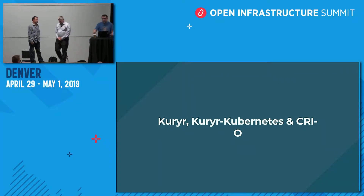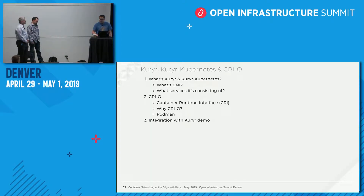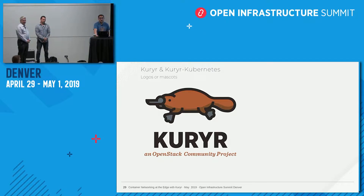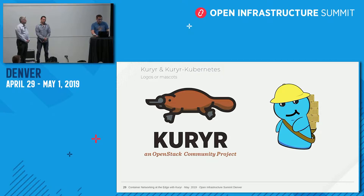Let me go quickly through what Courier is and why we want to use it to enable workloads between the edge network and the core network. Just in case you're not familiar with Courier: it's a project sitting in between Kubernetes and OpenStack, providing a seamless networking experience between the two.